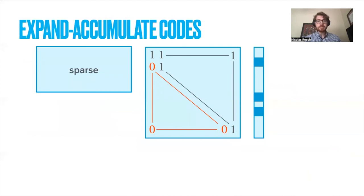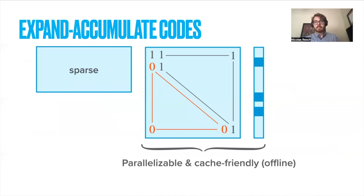This is exactly what we do. We construct what we call expand accumulate codes, which have very nice desirable properties. Firstly, in the offline phase, we just need to basically compute a prefix sum of the vector which we have received, which can be done in parallel and in a very cache friendly manner. By prefix sum, I mean the prefix sum mod two. So this is a very fast operation.